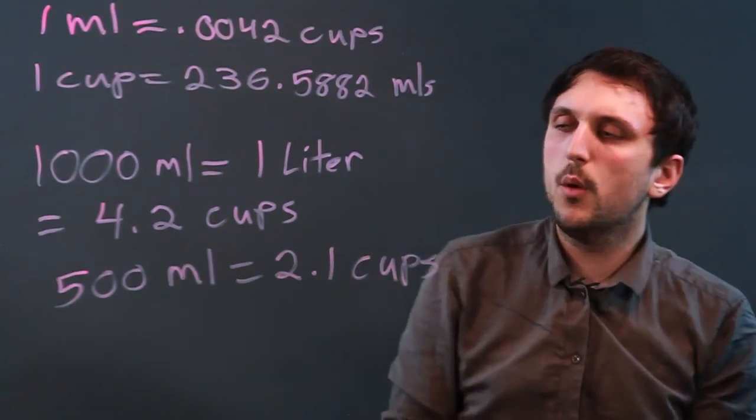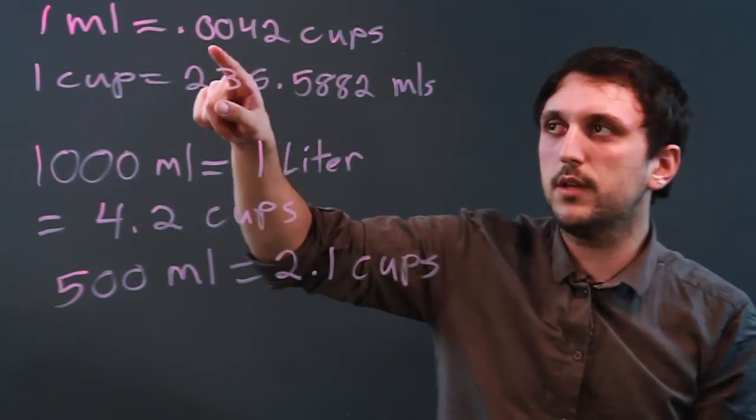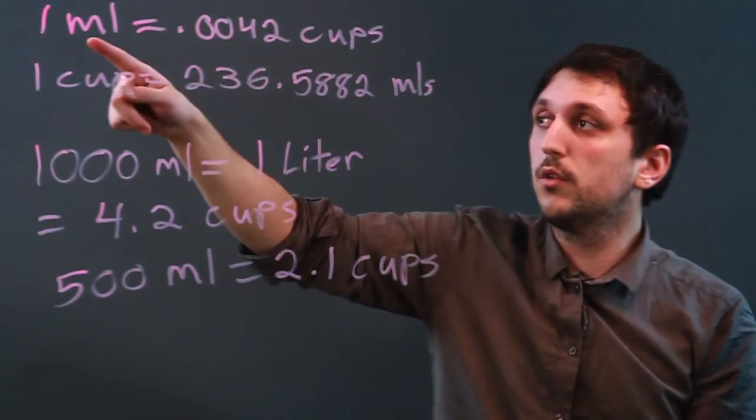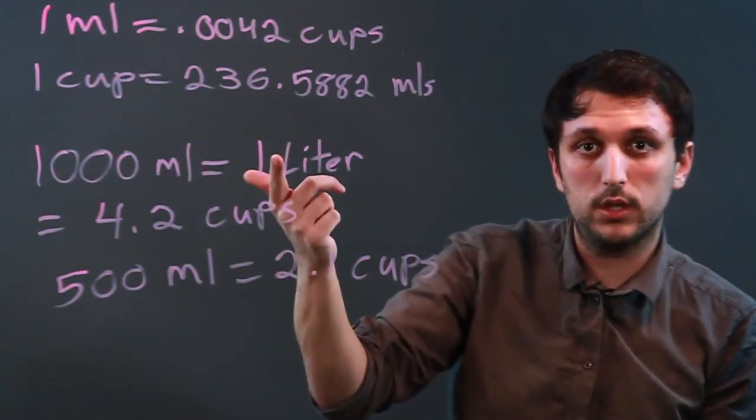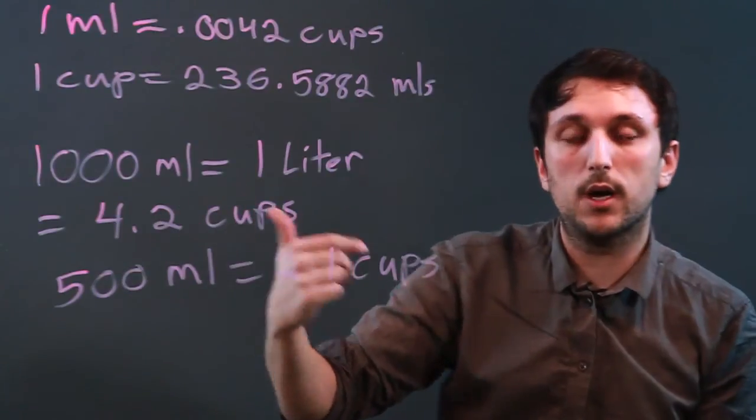So again, when you're dealing with cups, we don't usually deal with measurements this small, so we want to maybe increase the milliliters to get the right amount. So 1,000 milliliters or one liter equals 4.2 cups.